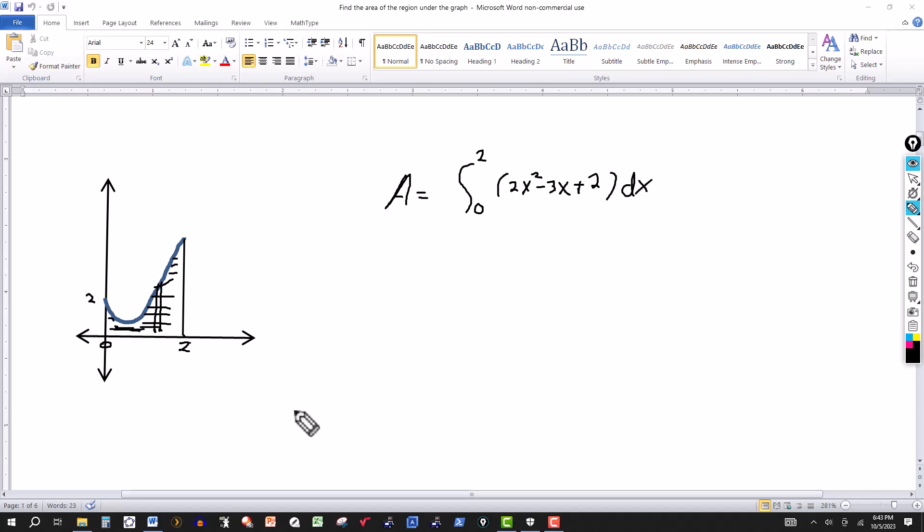So all we have to do is integrate this. Using the power rule for integrals, add 1 to the 2 gives me 3, and divide the coefficient by 3, I get 2/3x³ minus...